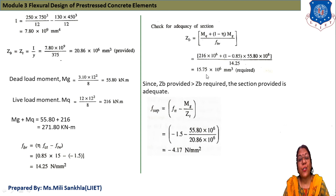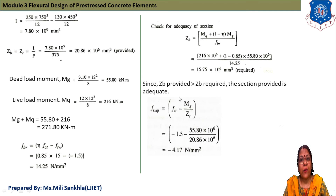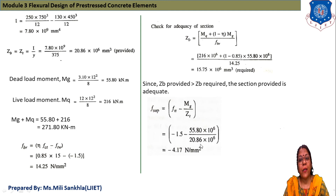Section check: required Z_b = (M_Q + (1 − η)·M_G) / f_br = (216 × 10⁶ + 0.15 × 55.80 × 10⁶) / 14.25 = 15.75 × 10⁶ mm³. Provided Z_b = 20.86 × 10⁶ mm³ > required, so the section is adequate.